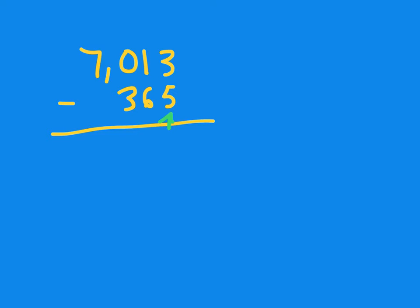So I'm going to add 5 to that, and I get 7,018. 5 plus 3 gives me the 8. When I add 5 to 365, I get 370. So this is my subtraction problem now. As long as I change both numbers the same way, I'm good.